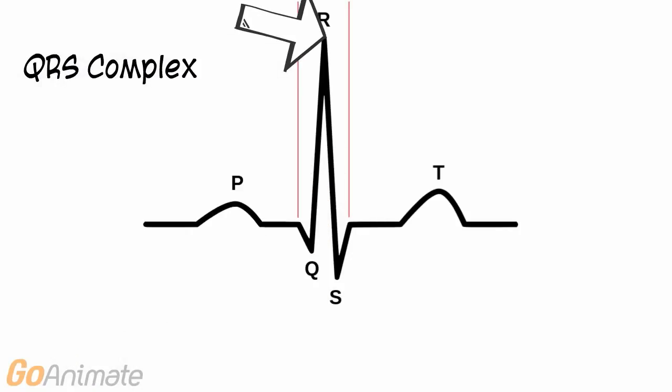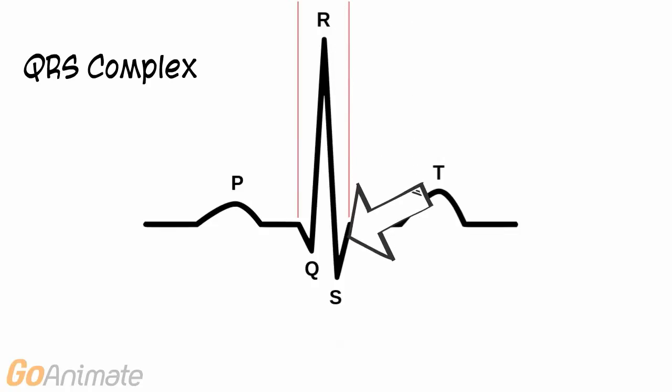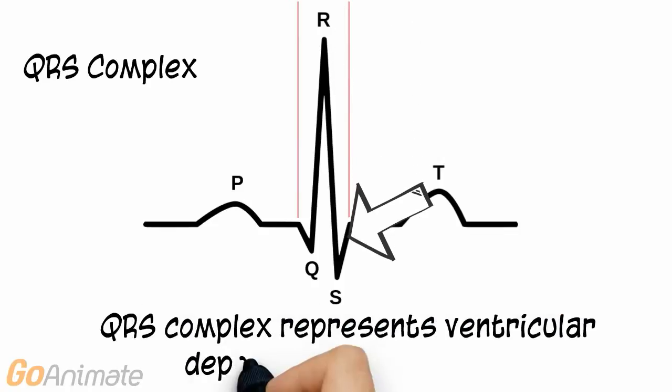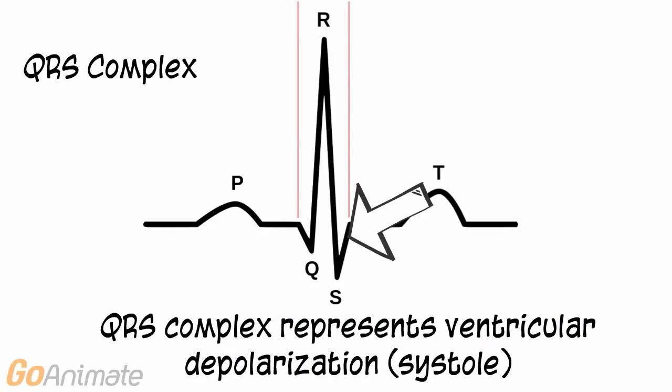The largest part of the ECG is the QRS complex, which represents ventricular depolarization, or systole. Atrial diastole also occurs at this time.